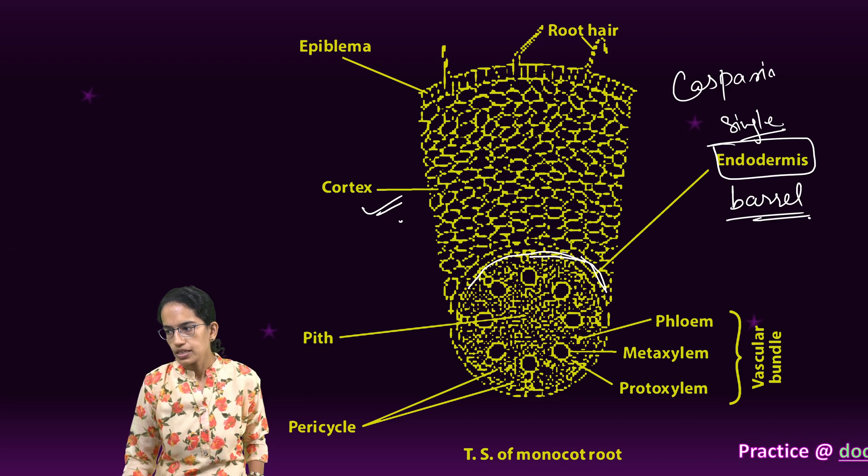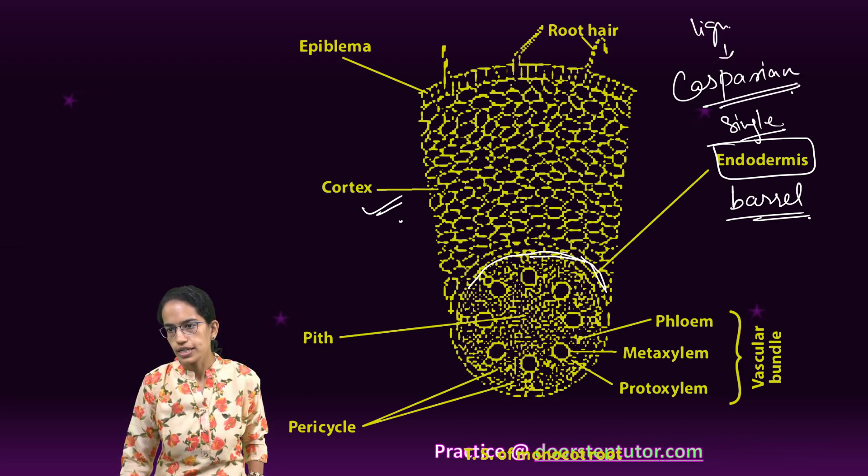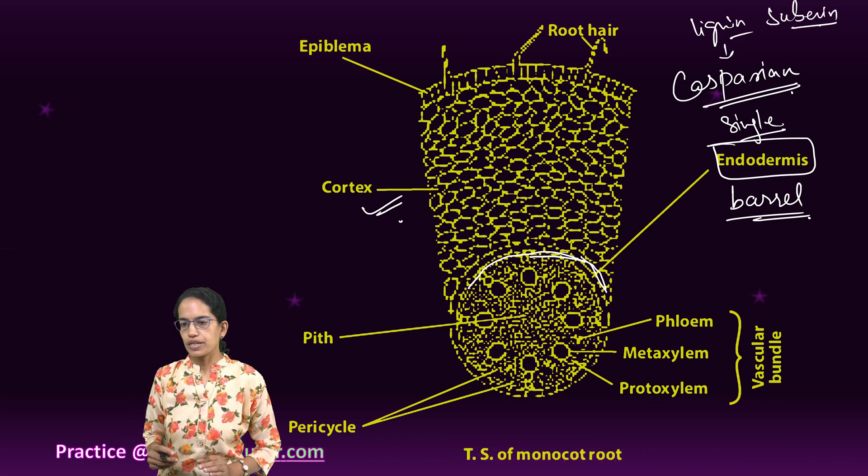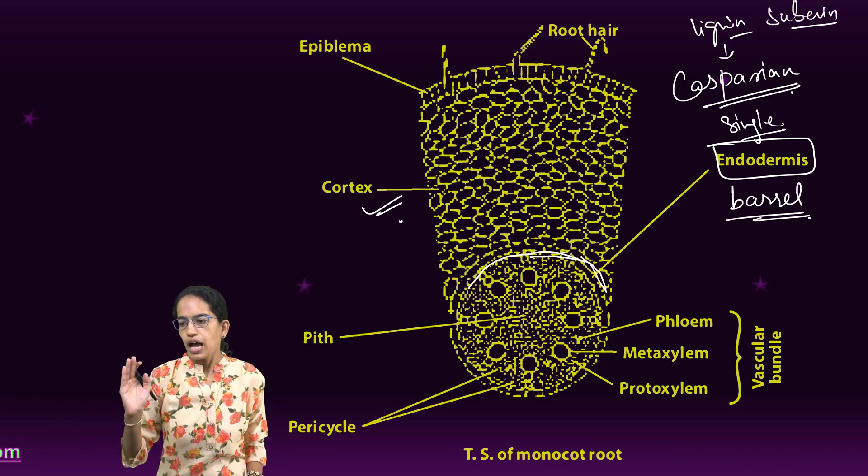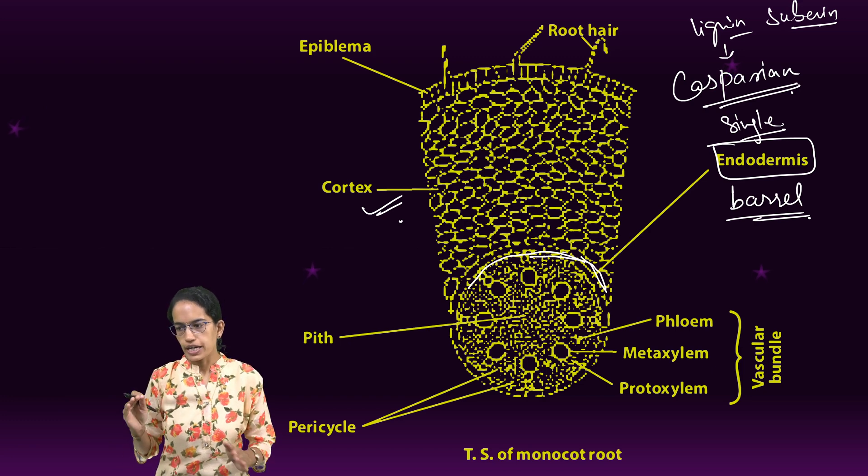This casparian strip is made of lignin and suberin. Lignin and suberin are the compounds used in the casparian strip, and this is one of the major parts of the endodermis layer.